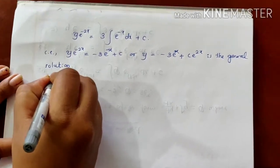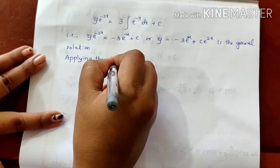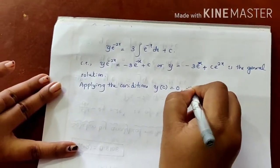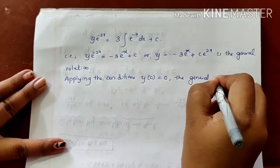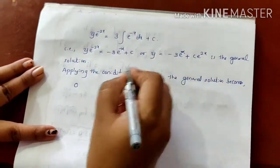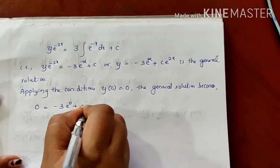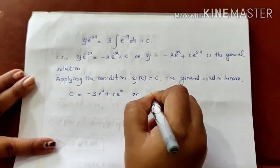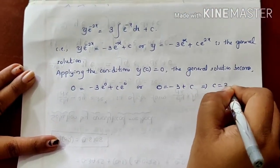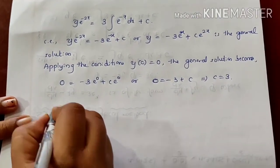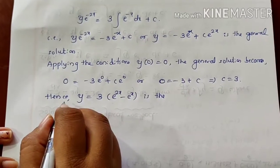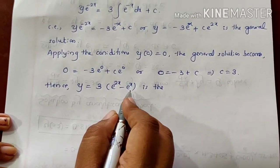Applying the initial conditions: the solution passes through the origin, so y(0) = 0. Substituting y = 0 and x = 0 into the general solution: 0 equals minus 3 into e raised to 0 plus c into e raised to 0, which gives 0 equals minus 3 plus c, so c equals 3. Hence y equals 3 into e raised to 2x minus e raised to x is the particular solution.